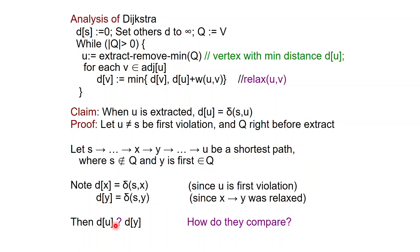How does D of Y compare to D of U? Well, D of U is at most D of Y, because D of U is the minimum, right? But D of Y is equal to delta of S of Y, as we just remarked, and because we took things along the shortest path, delta of S of Y is at most delta of S of U. And this concludes our proof.